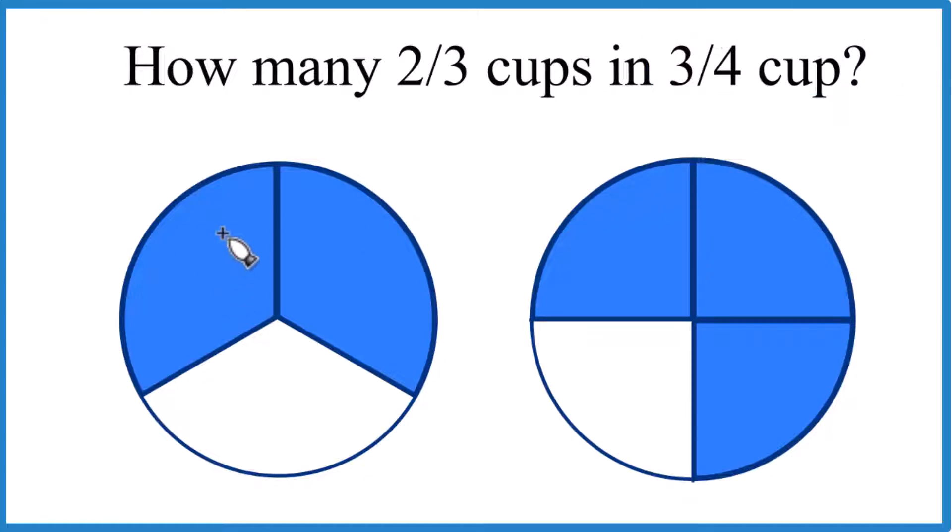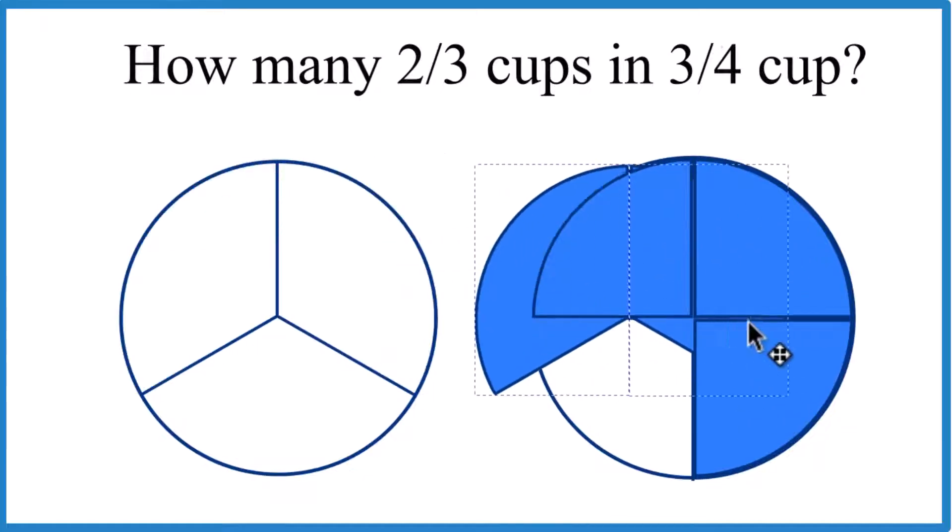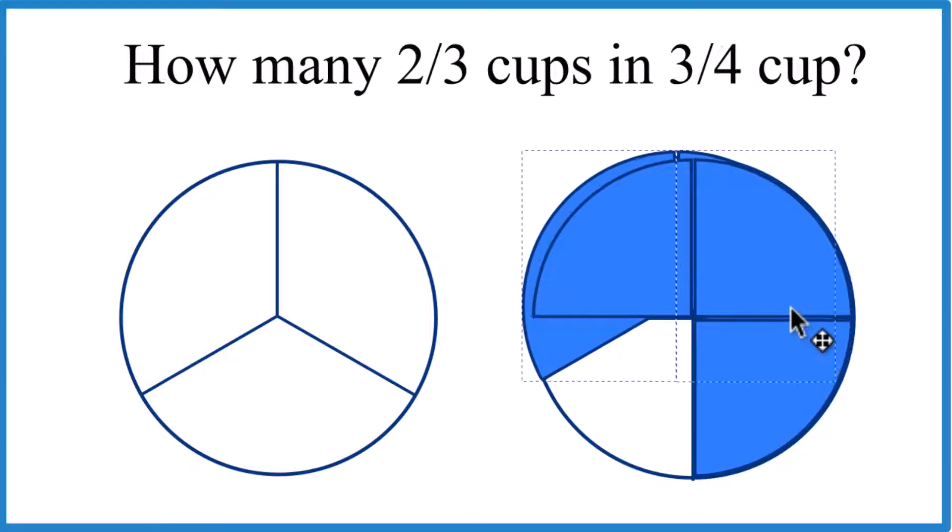So we can see here we have two parts out of three, two-thirds, and then three parts out of four, three-fourths. And it looks like maybe one would go in, then maybe a little bit more.